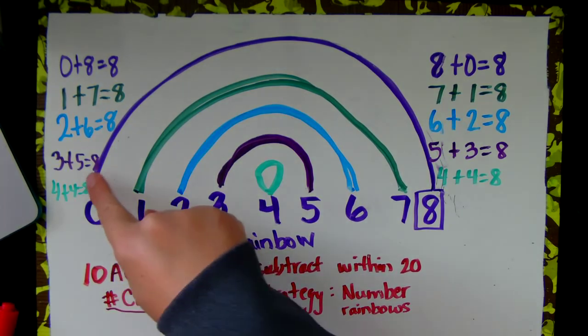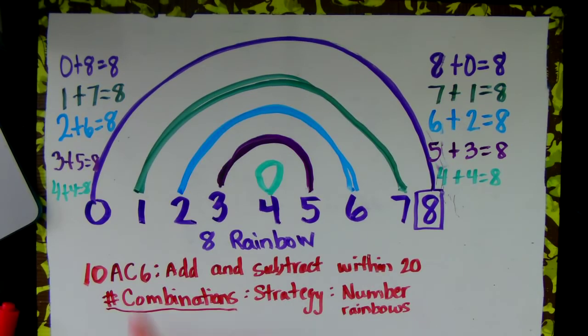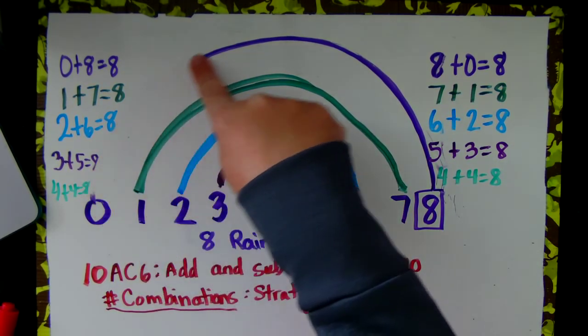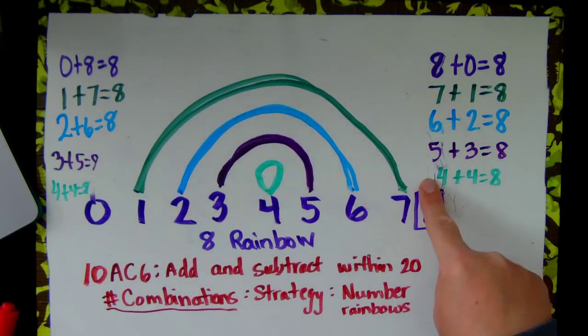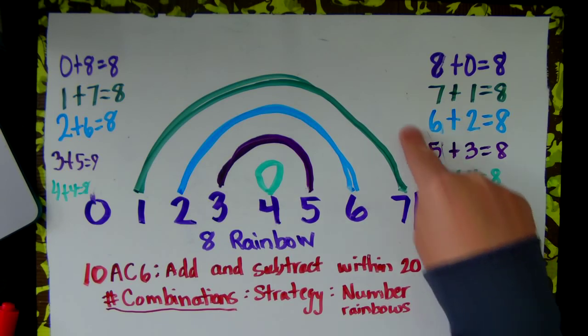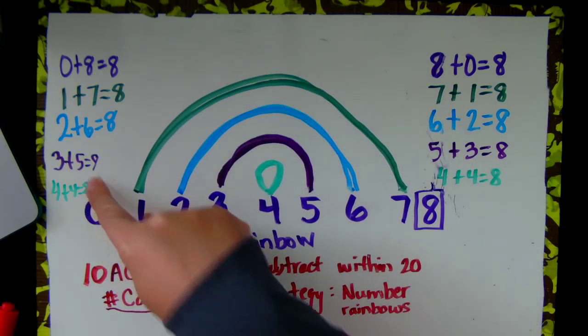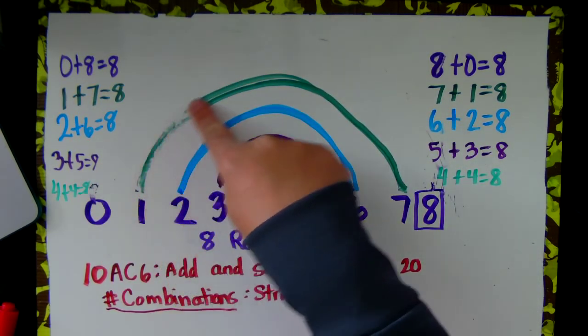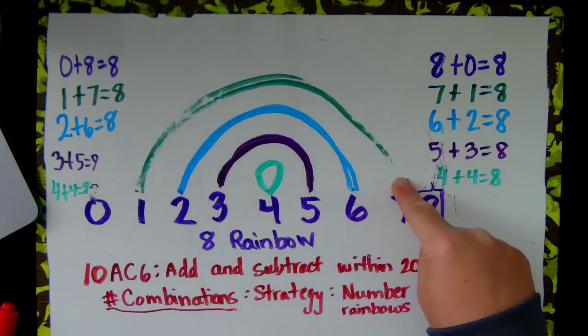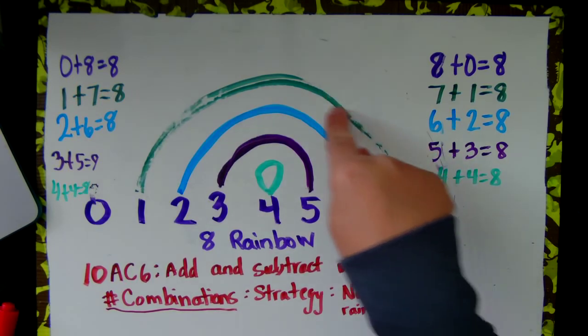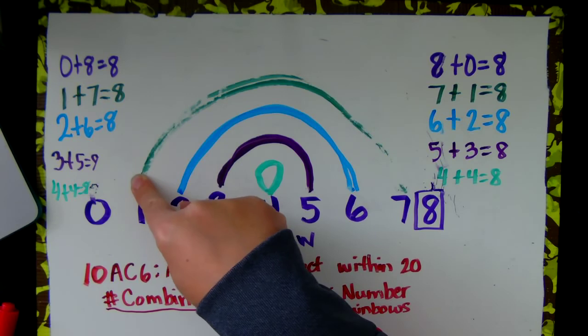Let's say them fast. This time we're going to erase as we go. So, 0 and 8 make 8, 8 and 0 make 8, 1 and 7 make 8, 7 and 1 make 8.